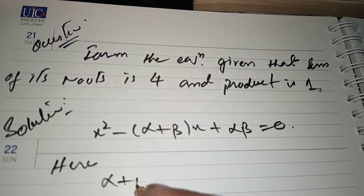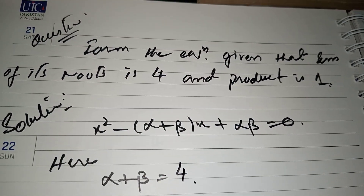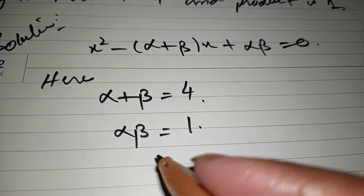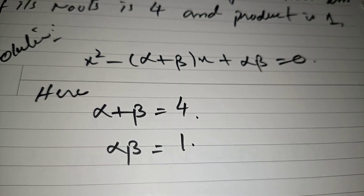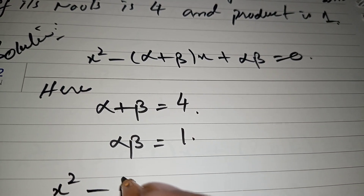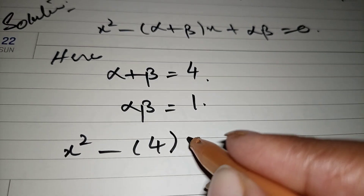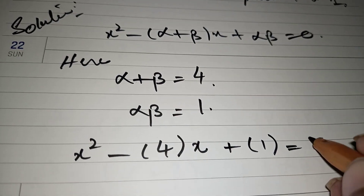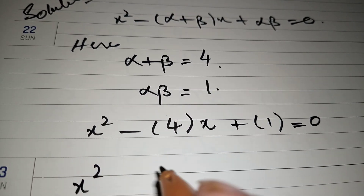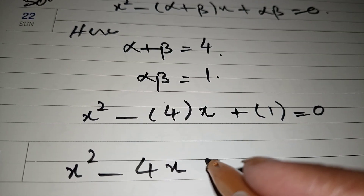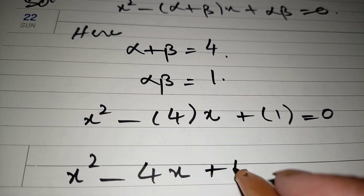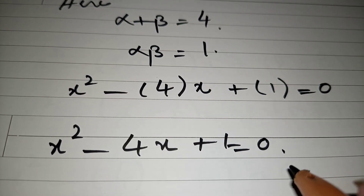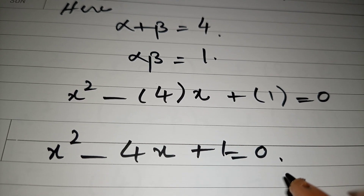Here the sum of the roots, alpha plus beta, is equal to 4, and the product of the roots, alpha times beta, is equal to 1. Putting these values into the formula gives x squared minus 4x plus 1 equals 0. This is the required equation, found using the sum and product of the roots.